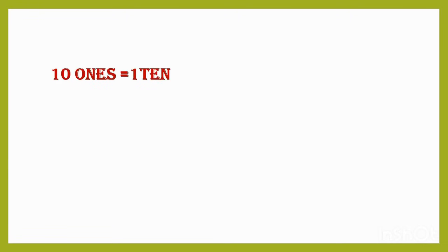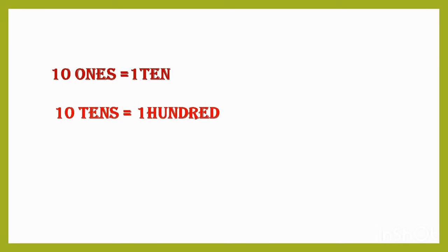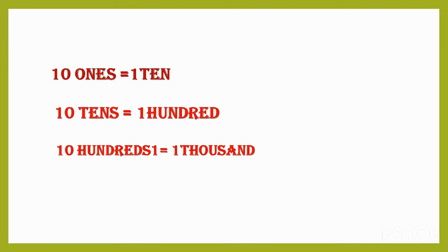So what's the spelling of 1000? T-H-O-U-S-A-N-D. Now we have learnt: 10 ones is equal to 1 ten, 10 tens is equal to 100, and 10 hundreds is equal to 1000.